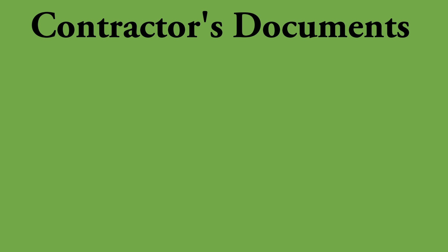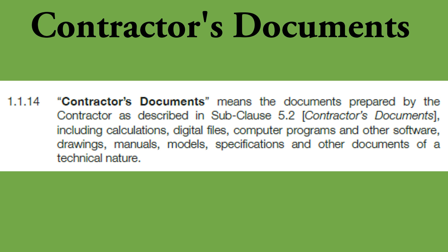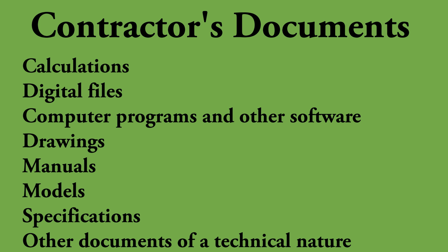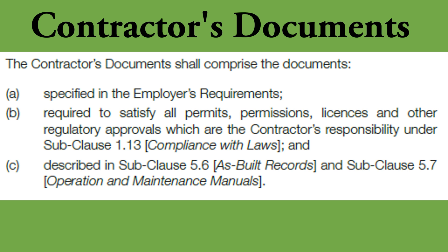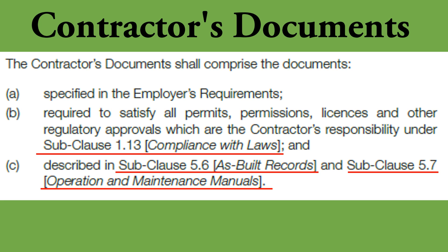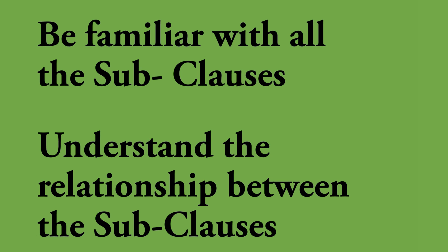Next I'll talk about 'contractor's documents', which means the documents prepared by the contractor as described in sub-clause 5.2, including calculations, digital files, computer programs and other software, drawings, manuals, models, specifications, and other documents of a technical nature. Sub-clause 5.2 says contractor's documents shall comprise, as specified in the employer's requirements, documents required to satisfy all permits, permissions, licenses and other regulatory approvals, which are the contractor's responsibility under sub-clause 1.13 compliance with laws, and as described in sub-clause 5.6 as-built records, and sub-clause 5.7 operation and maintenance manuals. In this document, most sub-clauses are connected to one or more other sub-clauses, so you need to be thorough with all these conditions when working with contract-related matters.